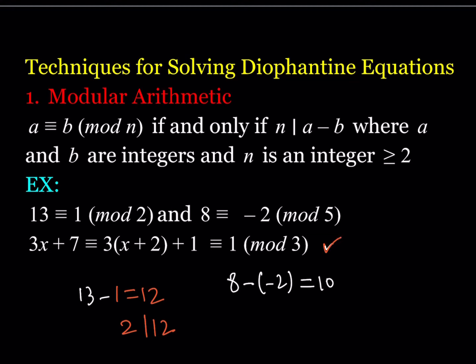Now let's look at a more interesting example containing a variable. Consider 3x plus 7. Using the division algorithm, we can factor out the 3, writing this as 3 times the quantity (x plus 2) plus 1. It is congruent to 1 mod 3 because 3(x+2) is a multiple of 3 — that's 0 mod 3 — leaving a remainder of 1.